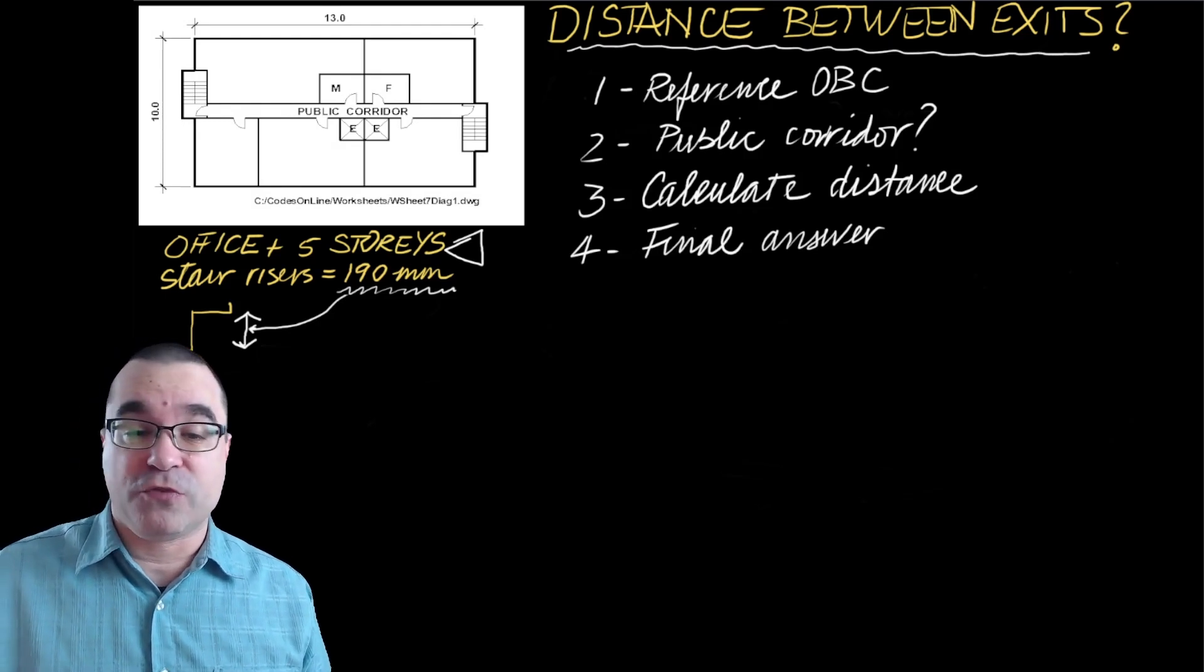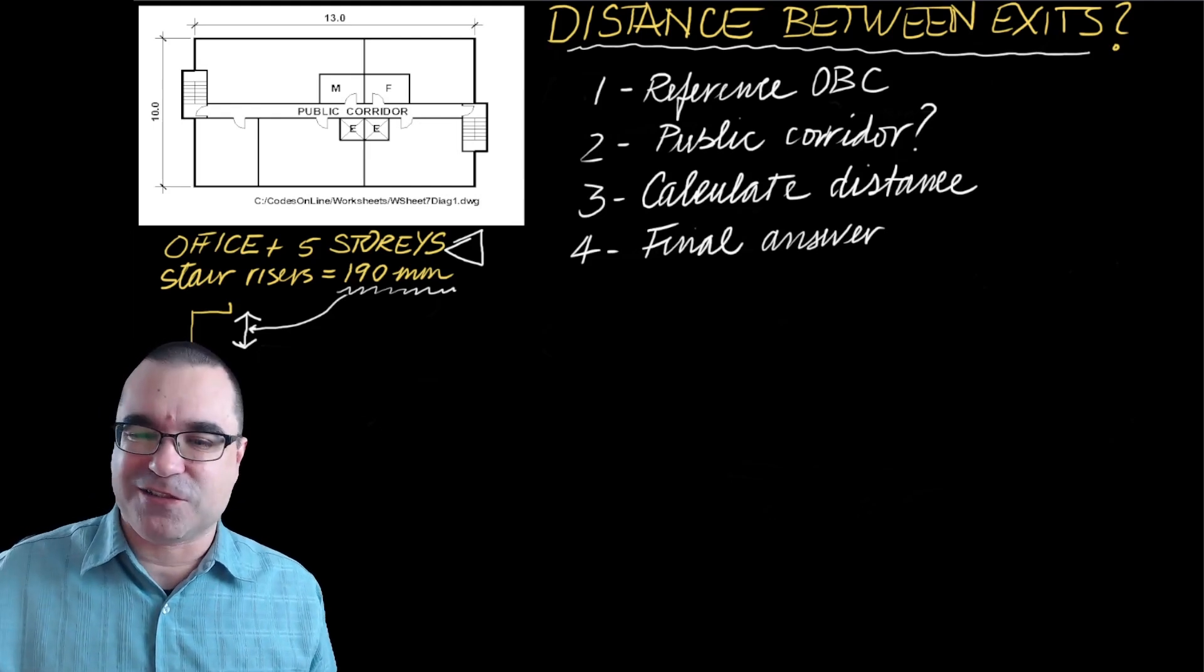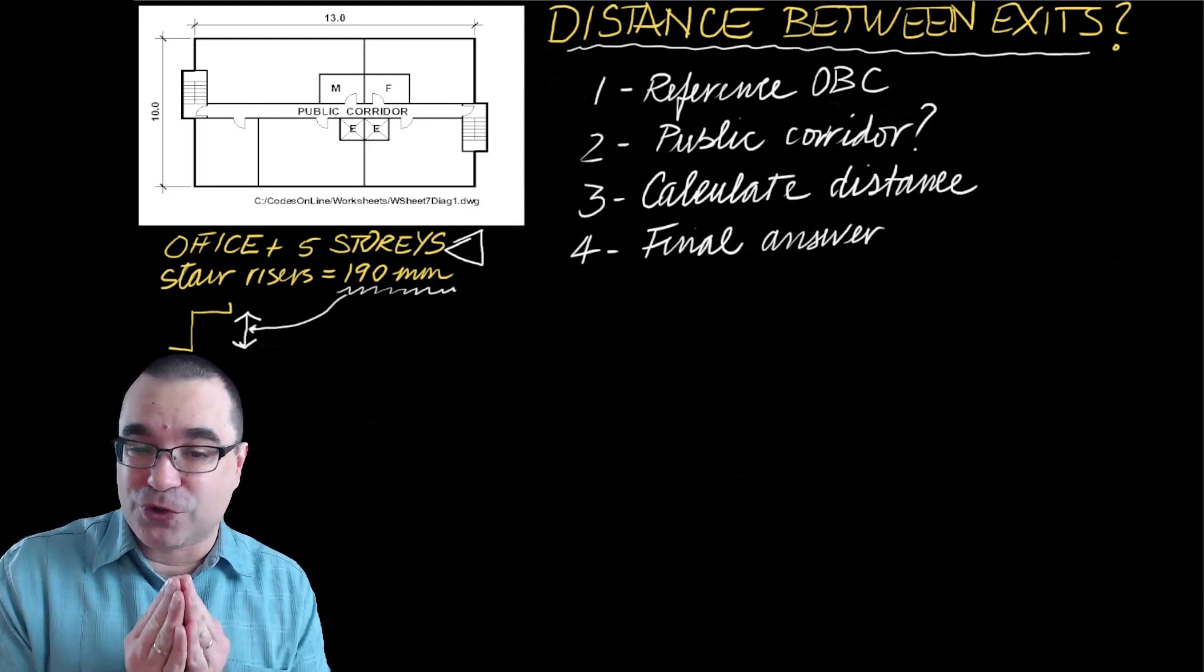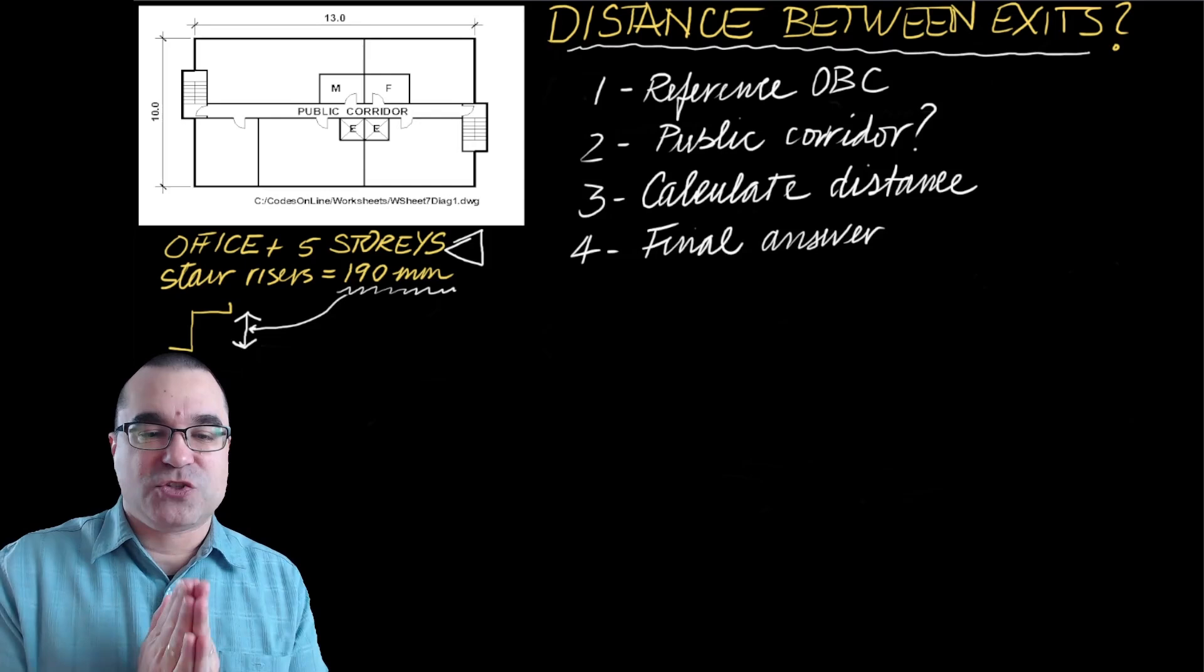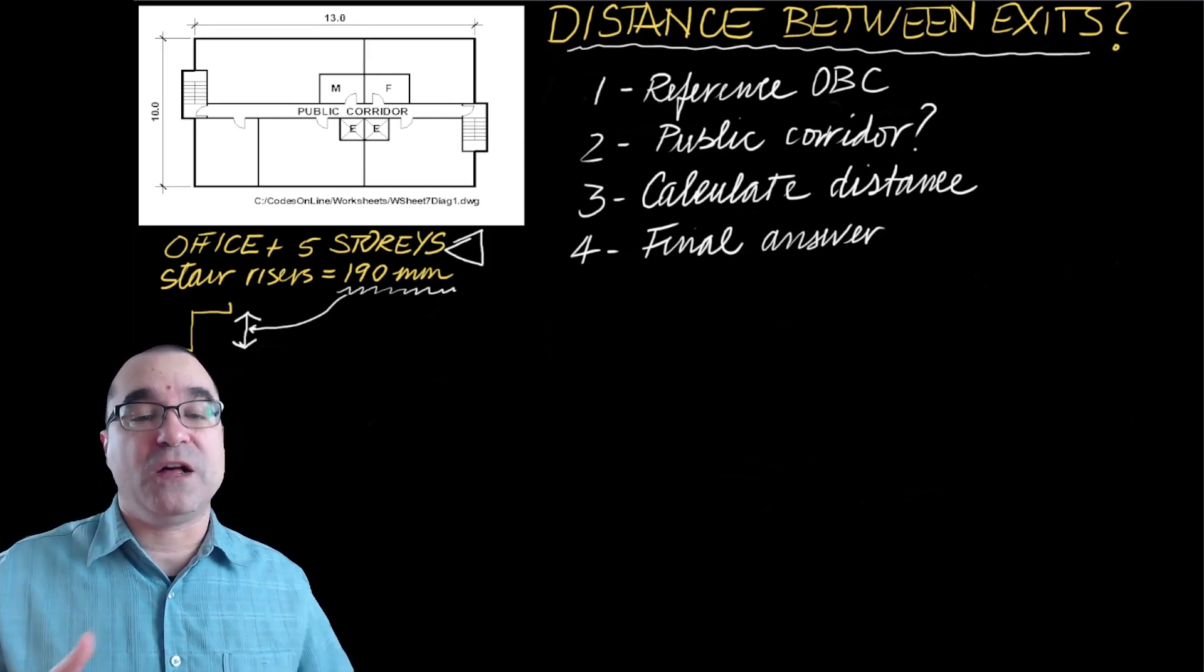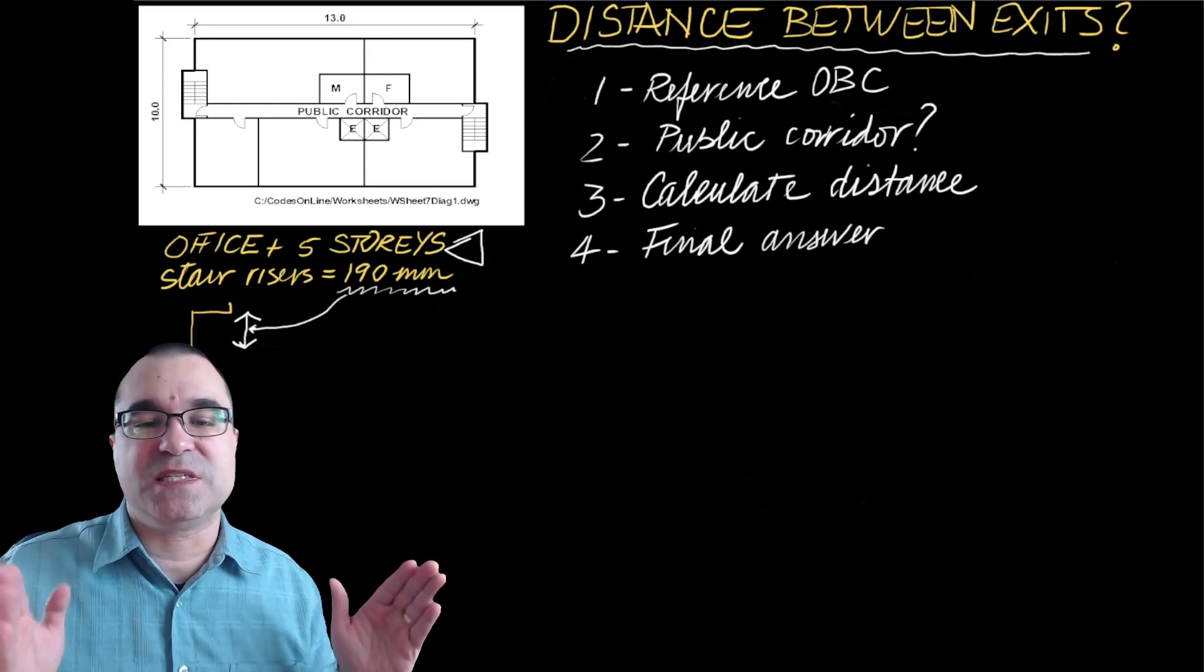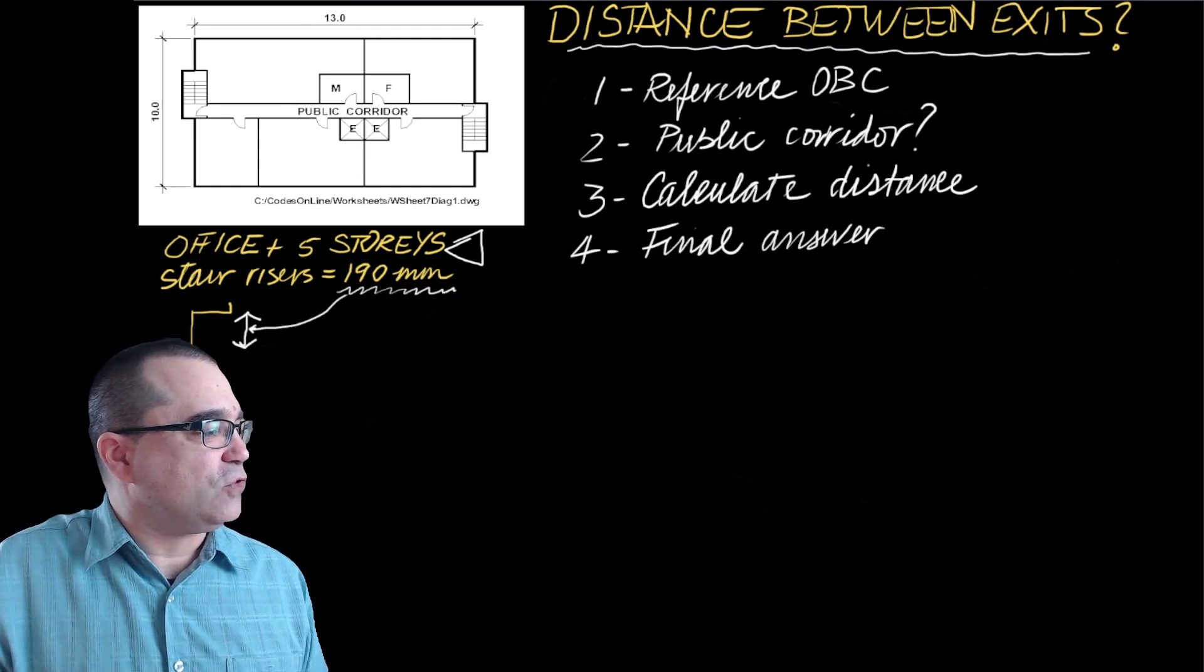We're going to start off first with referencing the correct portion of the Ontario Building Code. Then we're going to determine whether or not there is a public corridor. Based on the answer to step number two, we're going to calculate the distance between exits, and then as the final step, we'll come up with the final answer.